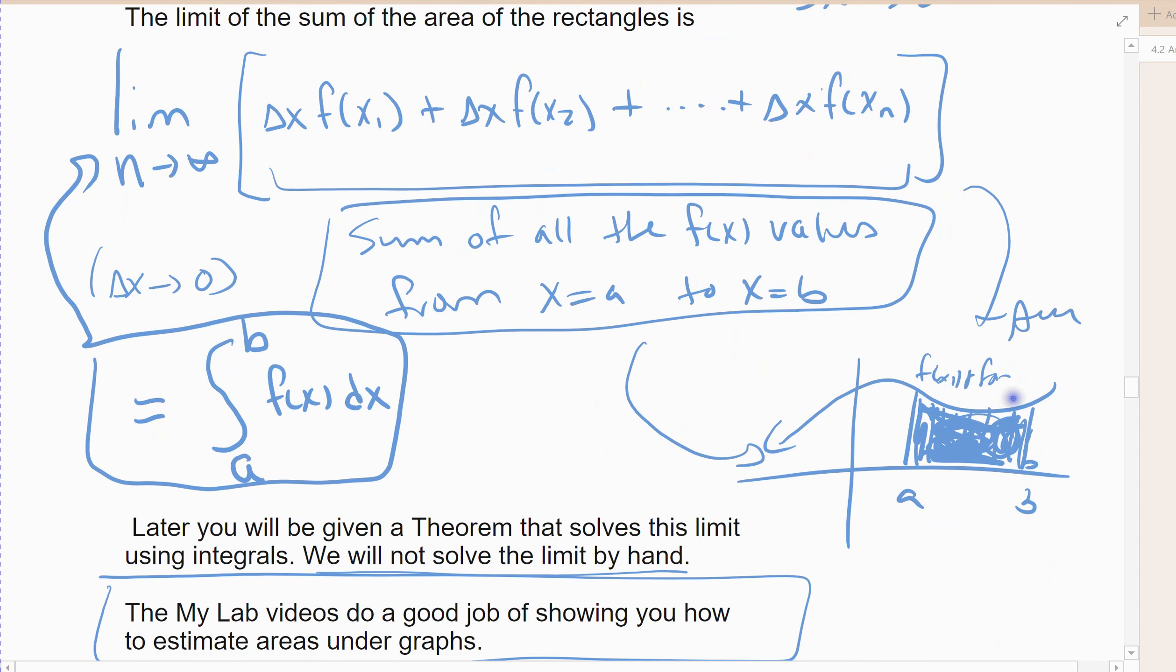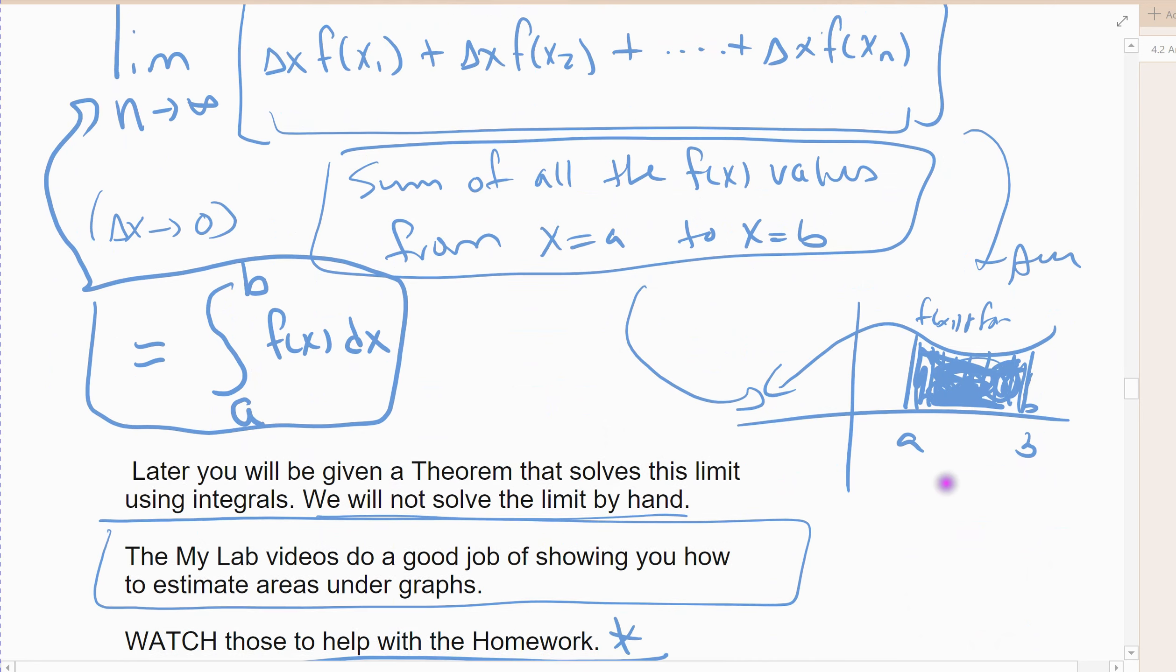All right, so this is the definite integral which is solved using this limit. What it is is the sum of all the function values from point a to point b, and it finds the area under the curve from point a to point b if my function is positive, above the x-axis from point a to point b.